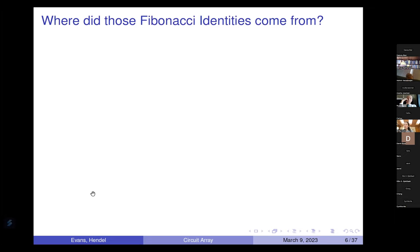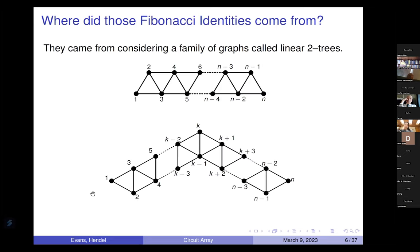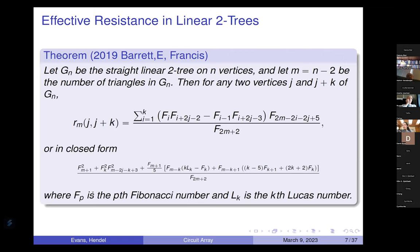Those Fibonacci identities came from studying a particular family of graphs called linear two-trees. We have a straight one on top and a bent one on the bottom. Amanda and Barrett and I came up with all these Fibonacci identities and effective resistance calculations that had Fibonacci numbers and Lucas numbers. We were lucky that we started with this particular family of graphs because Fibonacci and Lucas numbers are fairly well studied.